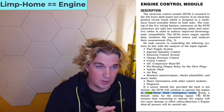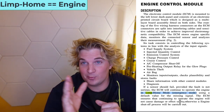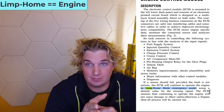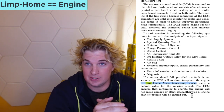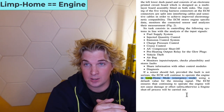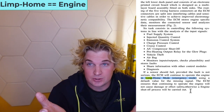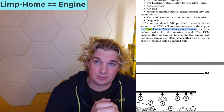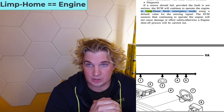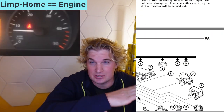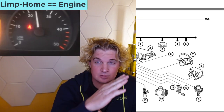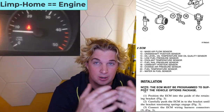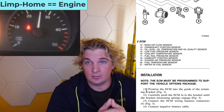First one: limp home mode, not to be confused with limp in mode. Limp home mode is an engine-related issue. The key defining characteristic is an RPM limitation, usually set to 3,000. So if your RPMs go above 3,000, you're not in limp home mode.